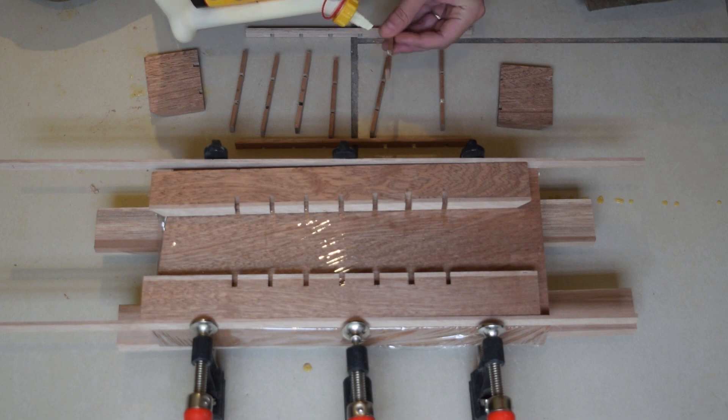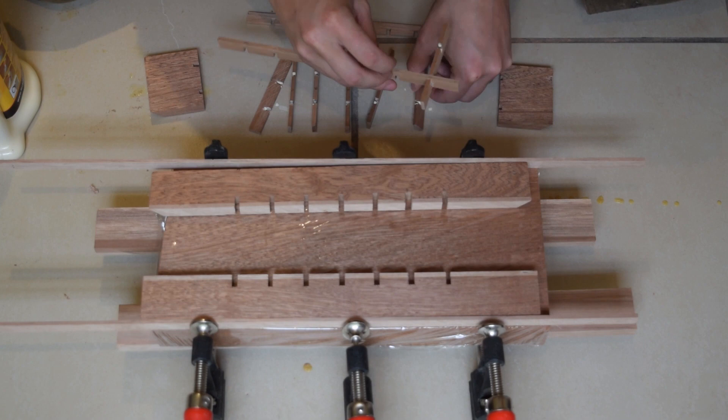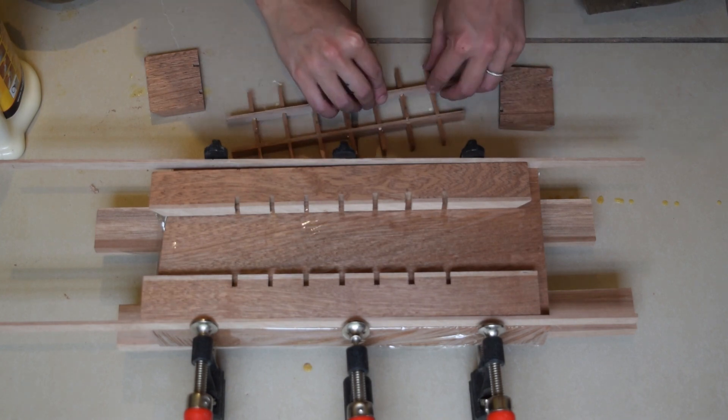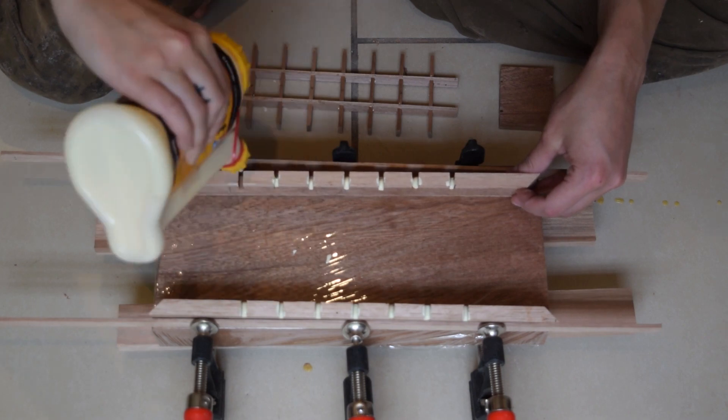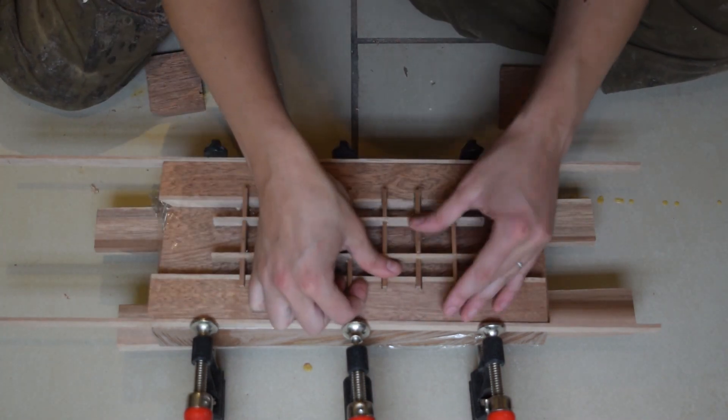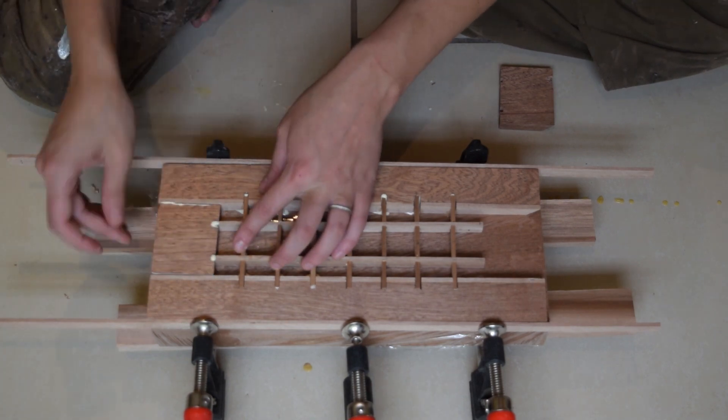To ensure a successful and stress-free glue-up, I recommend a few things. Number one, practice your clamping strategy before you get out the glue. Number two, saran wrap your underlayment to avoid gluing the wrong things together. And number three, get a glue bot. I'll put a link in the description below. That thing is awesome.